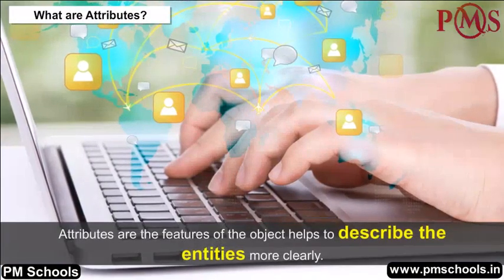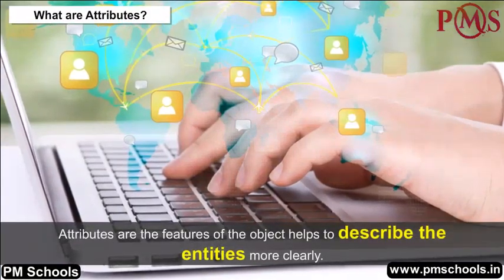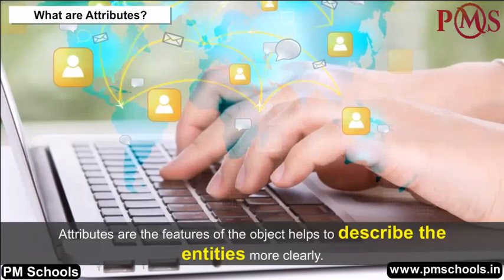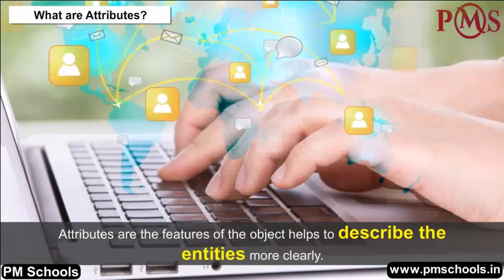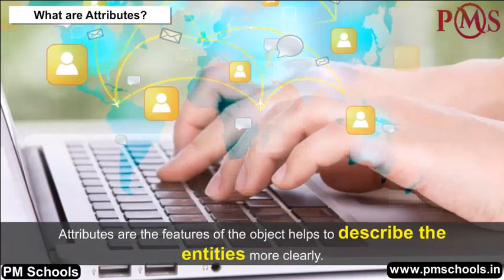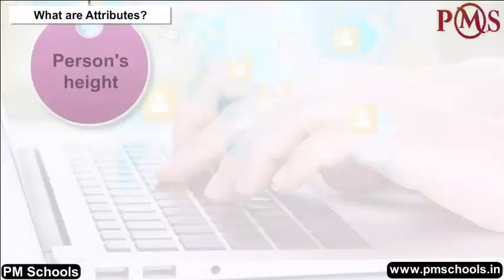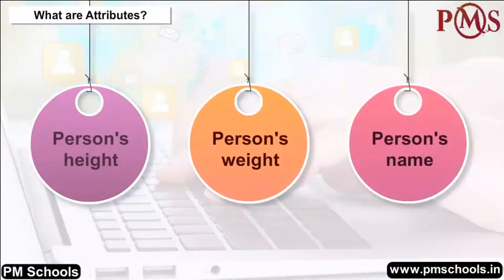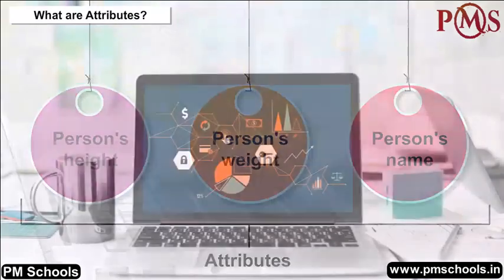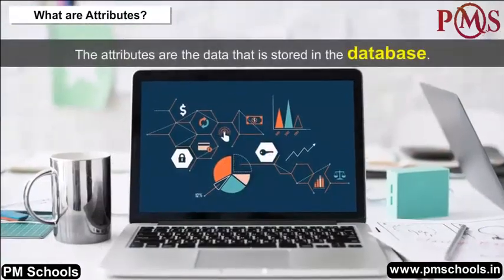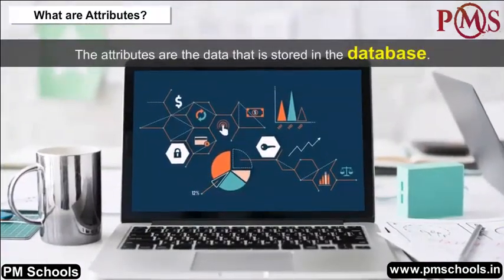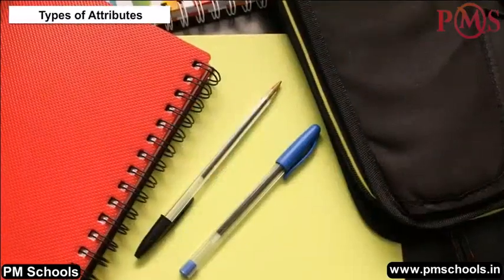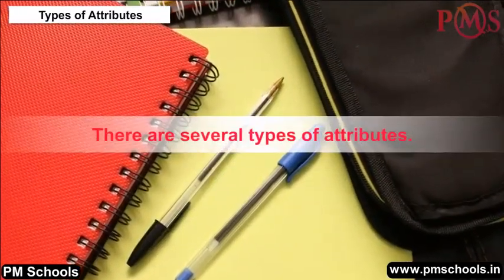What are Attributes? Attributes are features of an object that help to describe entities more clearly. For example, in the case of a person, height, weight, and name are attributes. Attributes are the data that is stored in the database.